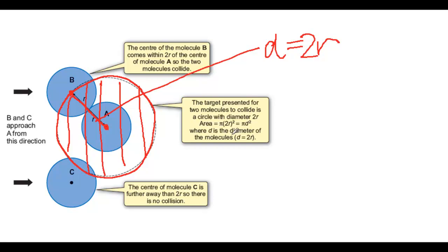The area of the target is pi D squared, and we call this the collision cross-section. It's given the symbol sigma, Greek letter sigma. So sigma equals pi D squared.